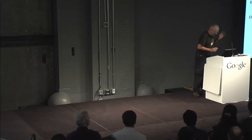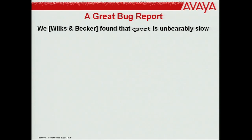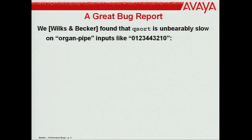Here's a great bug report. Alan Wilkes and Rick Becker found that qsort — code I was maintaining — is unbearably slow. On its own that's not a great bug report, but this makes it pretty good: on 'organ pipe' inputs like 0, 1, 2, 3, 4, 6, 8, 9, 9, 8, 7, 6, 5, 4, 3, 2, 1, 0. That's interesting — that's really useful. And here's a tiny eight-line program that tickles the bug for you.